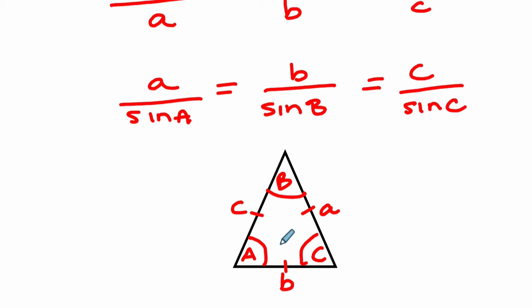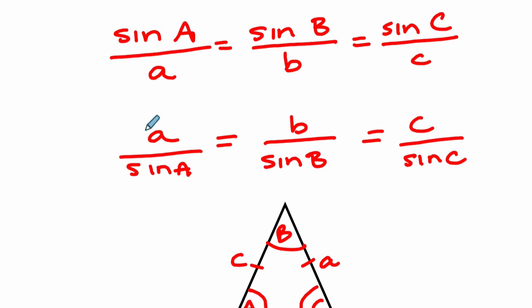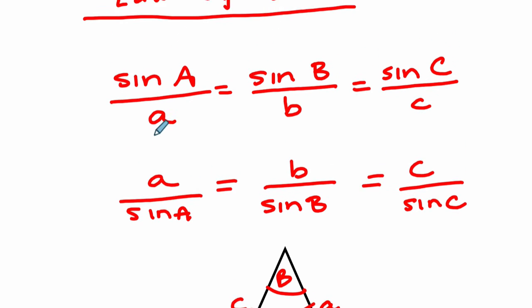So the sine of this angle divided by the length of this side equals the sine of this angle divided by the length of that side, which equals the sine of this angle divided by the length of that side. Those ratios are all the same either way you write it. So this version, or essentially the reciprocal of each expression in this equation.